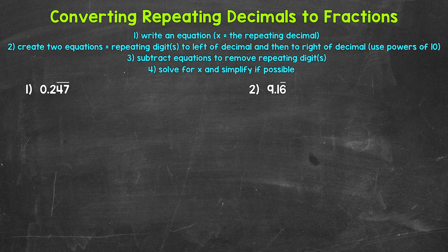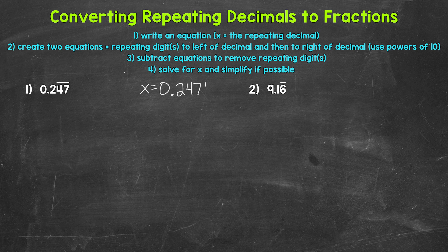Let's jump into our examples, starting with number one, where we have 0.2 and then 47 repeating. So the 2 in the tenths place is a non-repeating digit, and then the 4 and the 7 do repeat. For step one, we need to write an equation where x equals the repeating decimal. So x equals 0.24747, and this continues on forever.